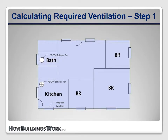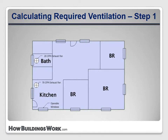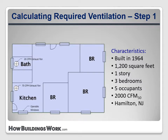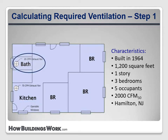Let's apply these calculations to an example house. We'll use the same floor plan and location as the new construction example, but change some assumptions. Based on a customer interview, the house was built in the 1960s and is occupied by a couple with three children — five occupants. The blower door reading is fairly high at 2000 CFM at 50 pascals. There are operable windows in the kitchen and bathroom; the bathroom has an exhaust fan measuring 20 CFM, and the kitchen has a sidewall vent fan measuring 70 CFM.